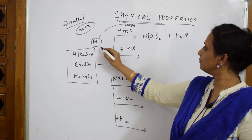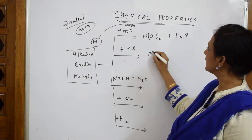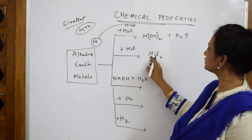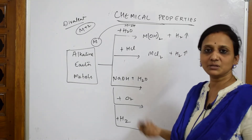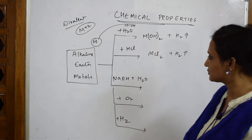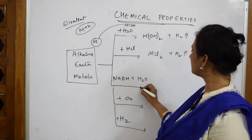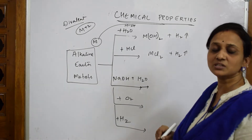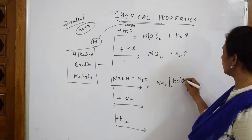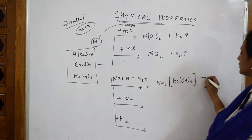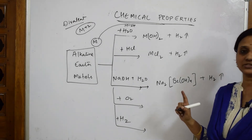When it comes to HCl, metal plus chlorine forms MCl₂ because the metal valency is 2, and hydrogen gas is released. This applies to all alkaline earth metals. When it comes to sodium hydroxide and water, you have to be very careful — only beryllium reacts with sodium hydroxide plus water, forming Na₂Be(OH)₄ plus hydrogen gas. Only beryllium reacts with sodium hydroxide in water.